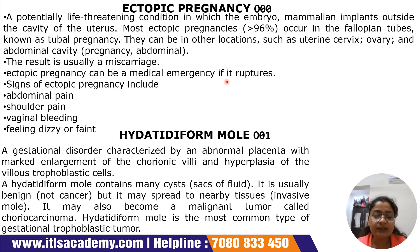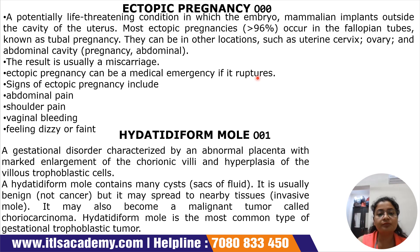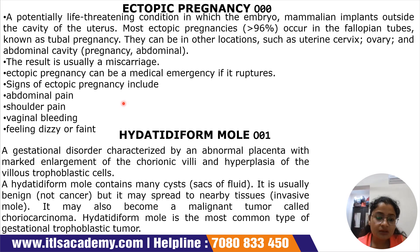Ectopic pregnancy can be a medical emergency if it ruptures. When rupture occurs, the entire fallopian tube can burst, leading to a huge amount of internal hemorrhage. Signs of ectopic pregnancy include abdominal pain, shoulder pain, vaginal bleeding, and feeling dizzy or faint.